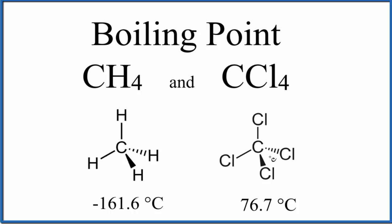Because they're attracted to each other, it's more difficult to separate them. We have to put more energy in to separate them and make them boil — change into a gas. But for methane, the London dispersion forces are pretty weak, so it boils at negative 161.6 degrees Celsius. That's very cold. In contrast, carbon tetrachloride has a boiling point of 76.7 degrees Celsius, relatively warm.